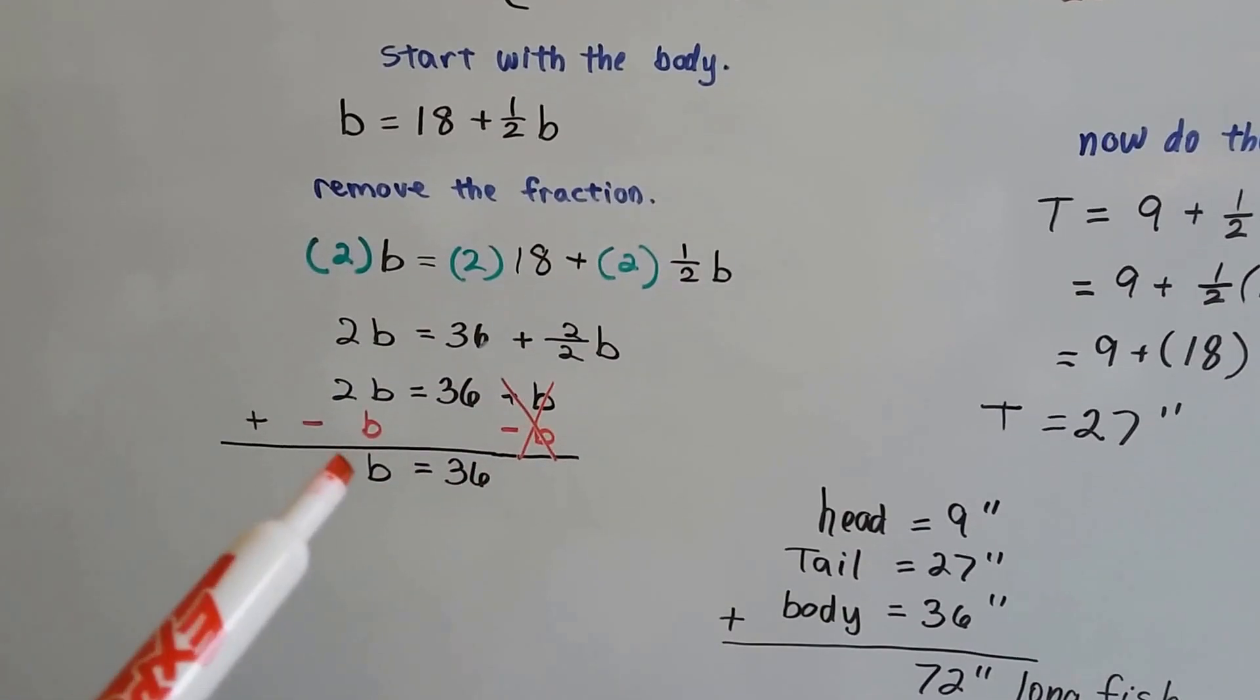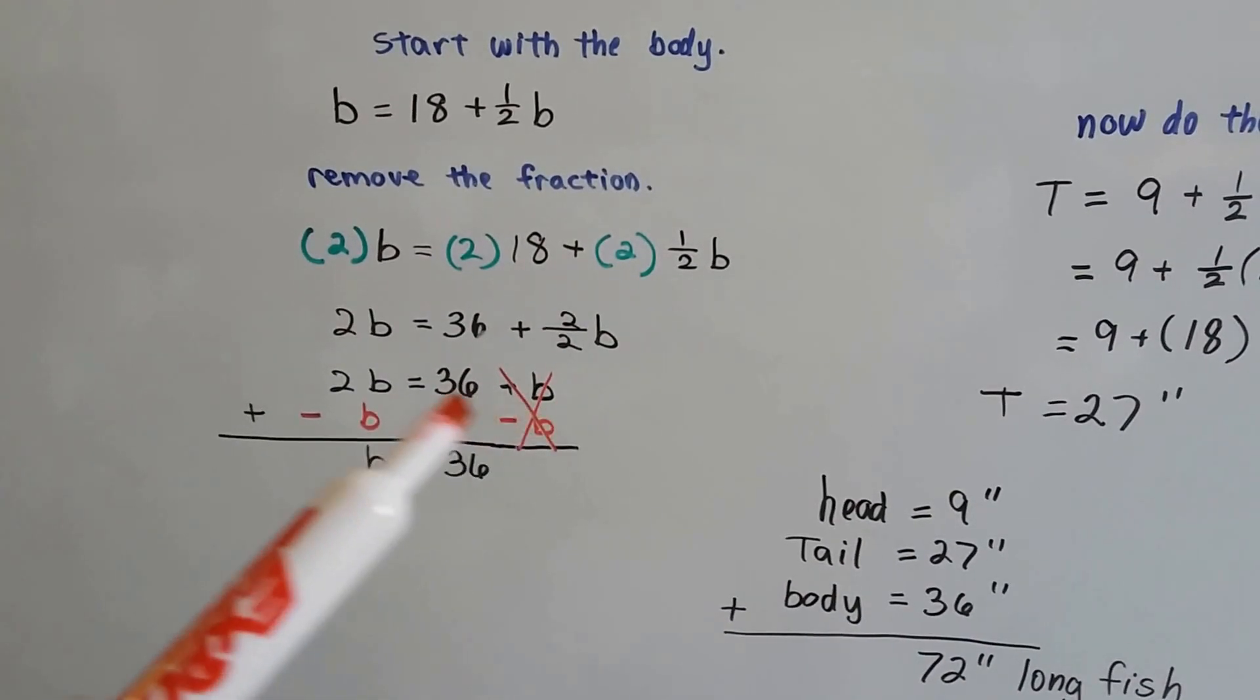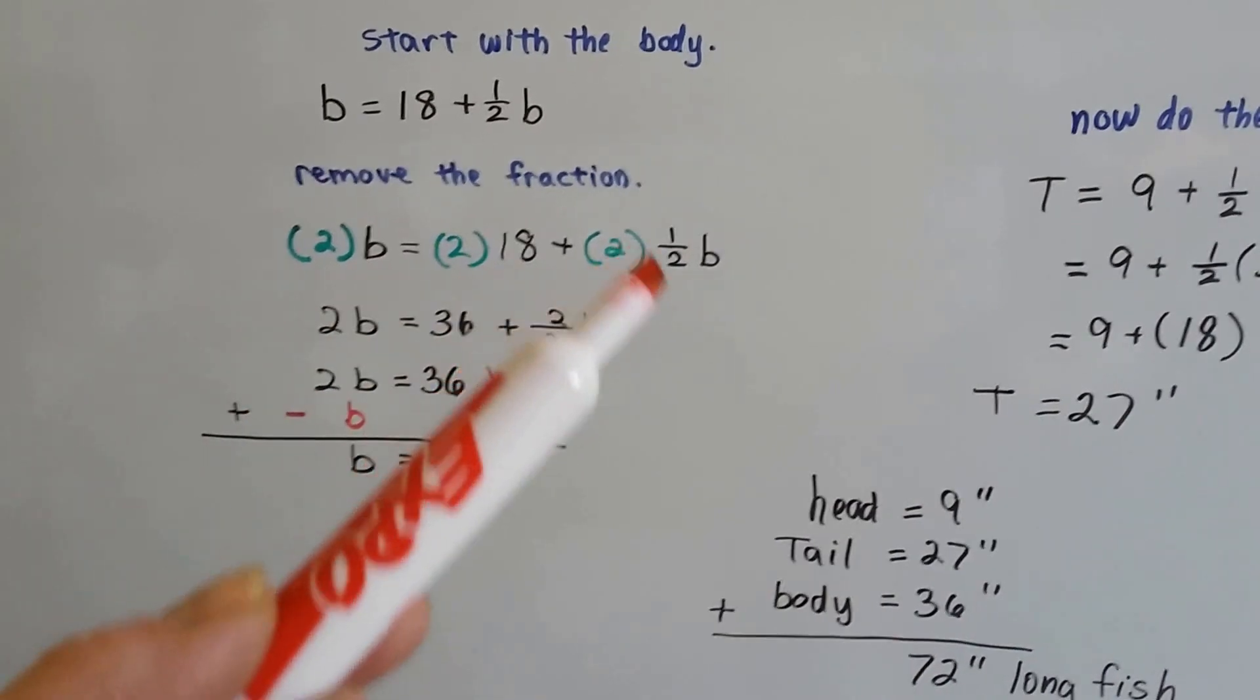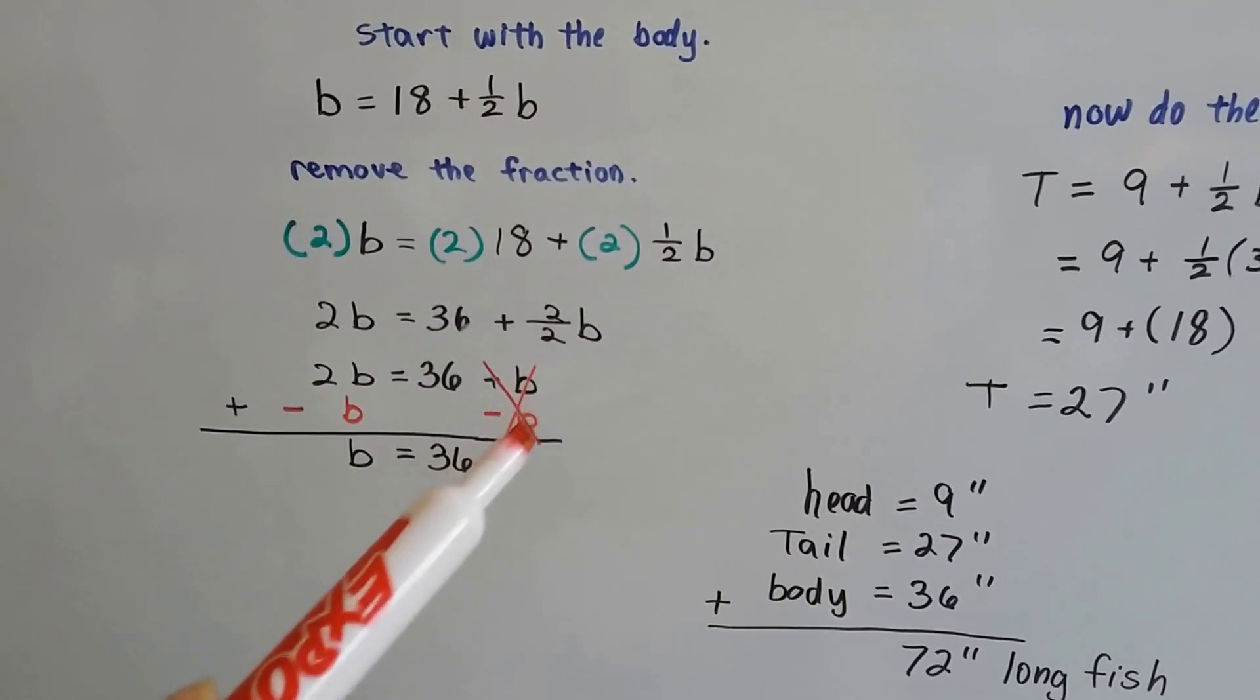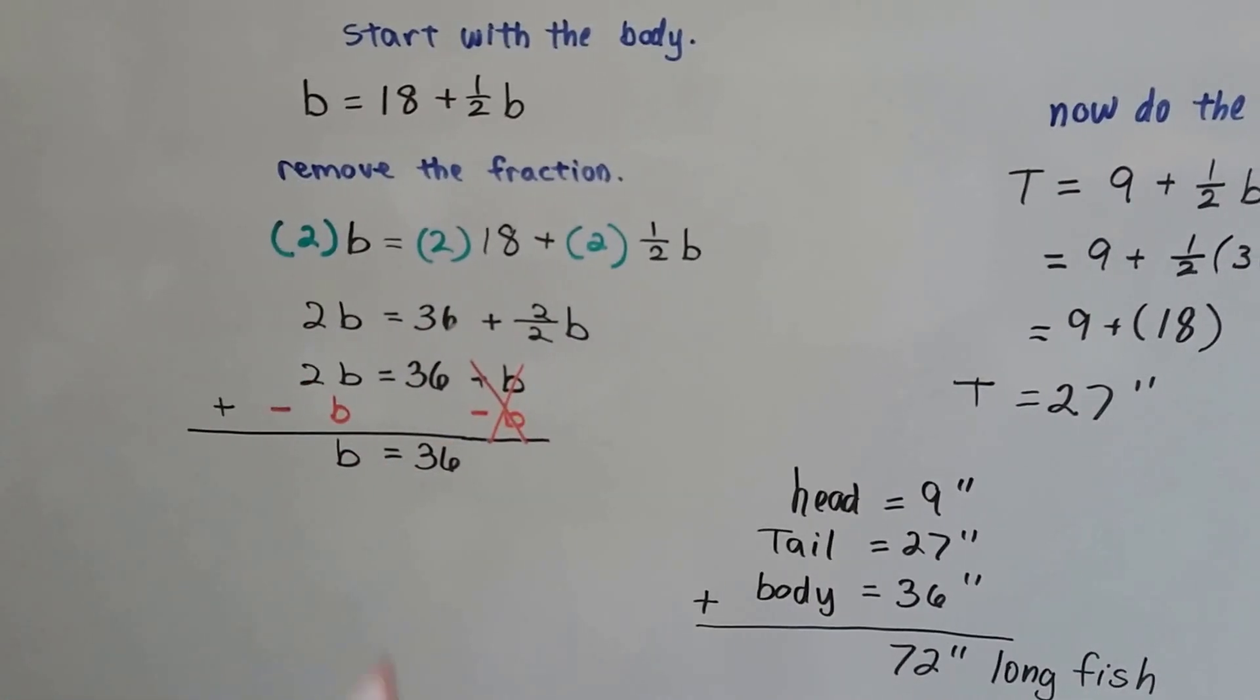If you don't multiply this side after the equal sign by two, you're going to end up with a negative b or a negative 36. And that's where you'll go wrong. By multiplying every single term by the two, we can eliminate this b on this side of the equal sign and bring this to just one b.